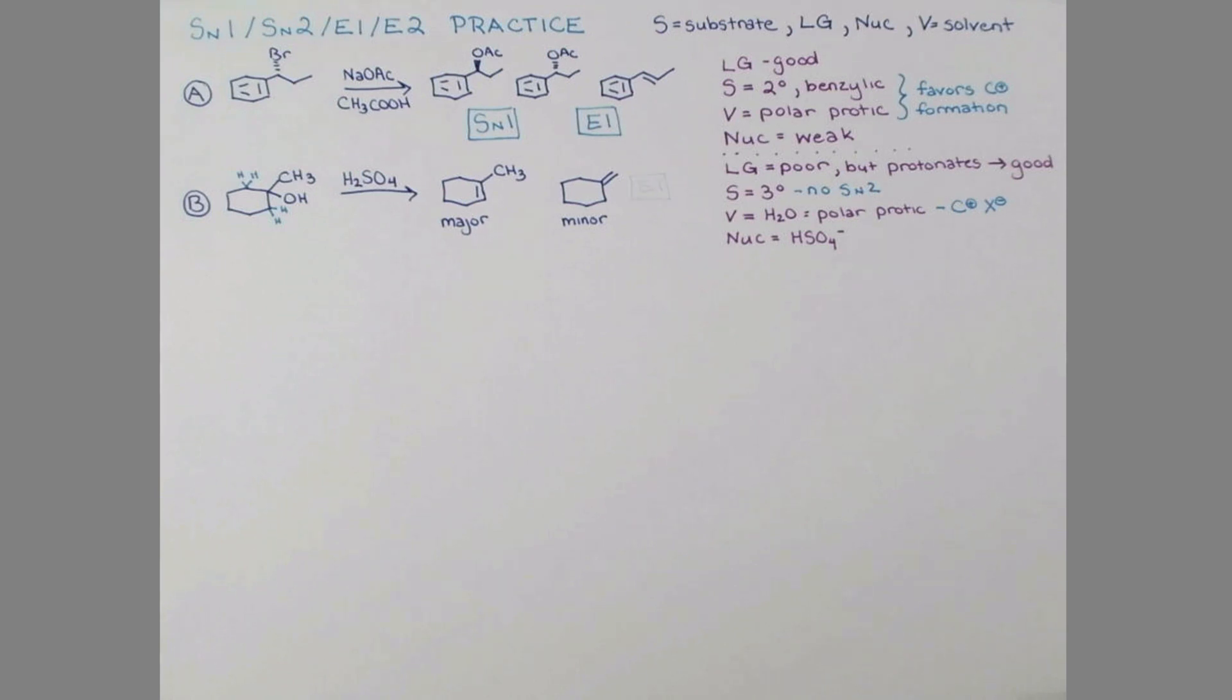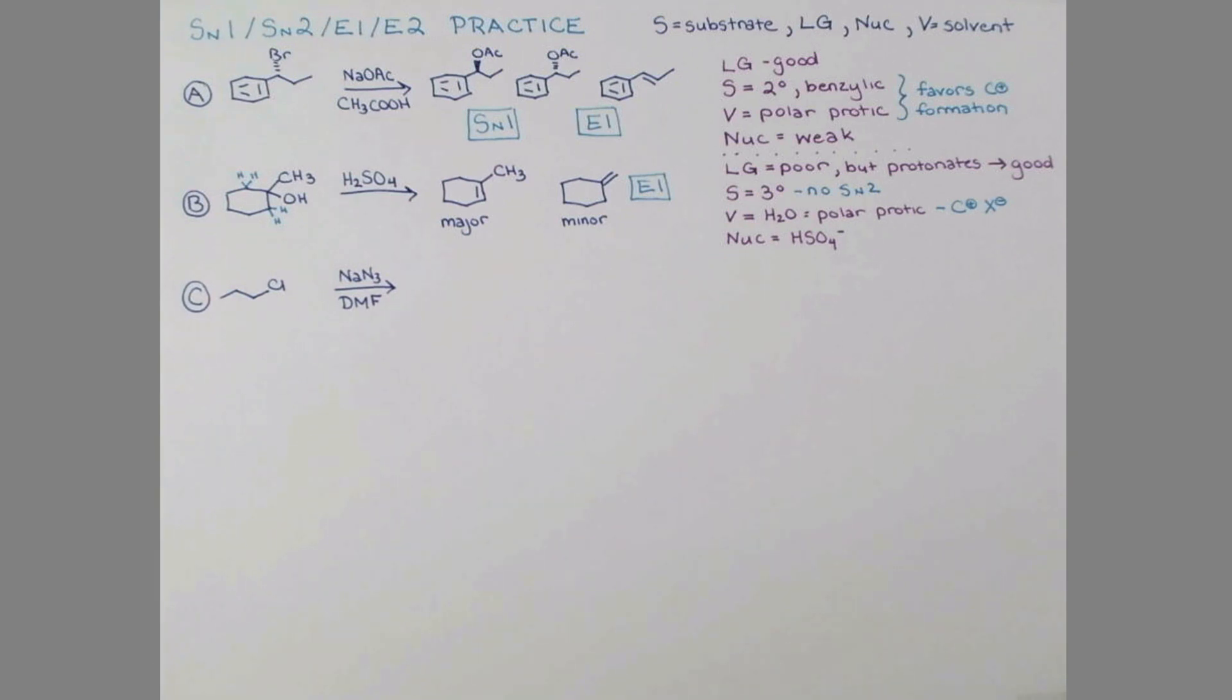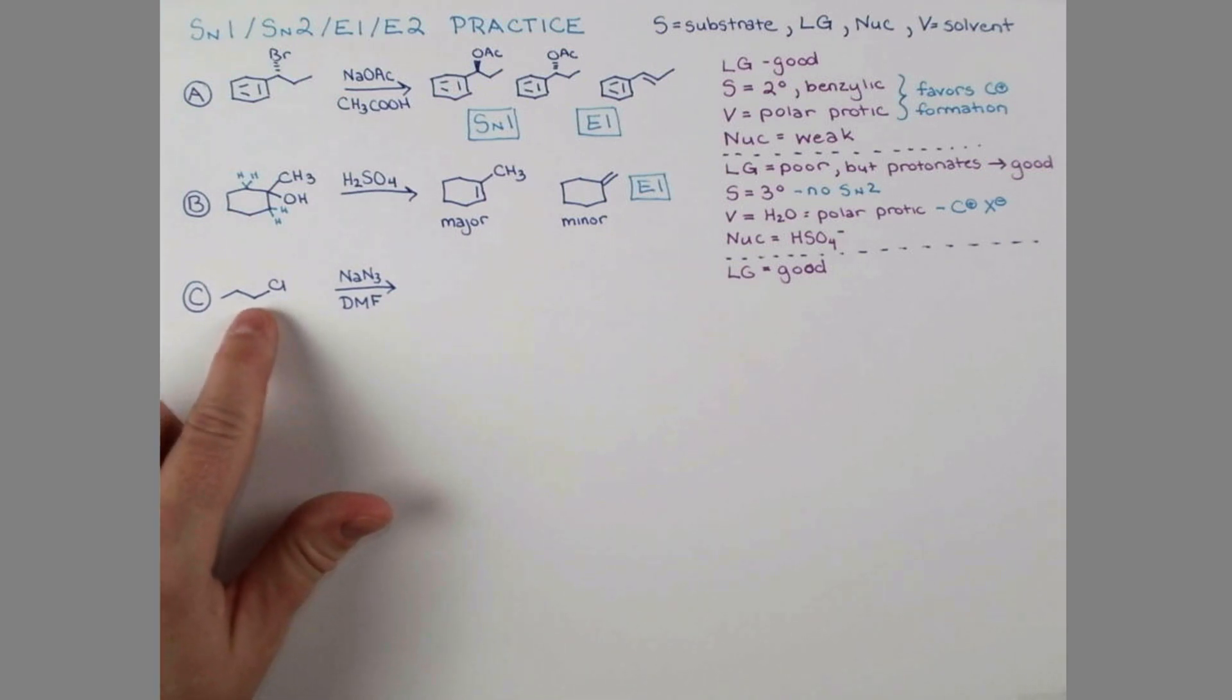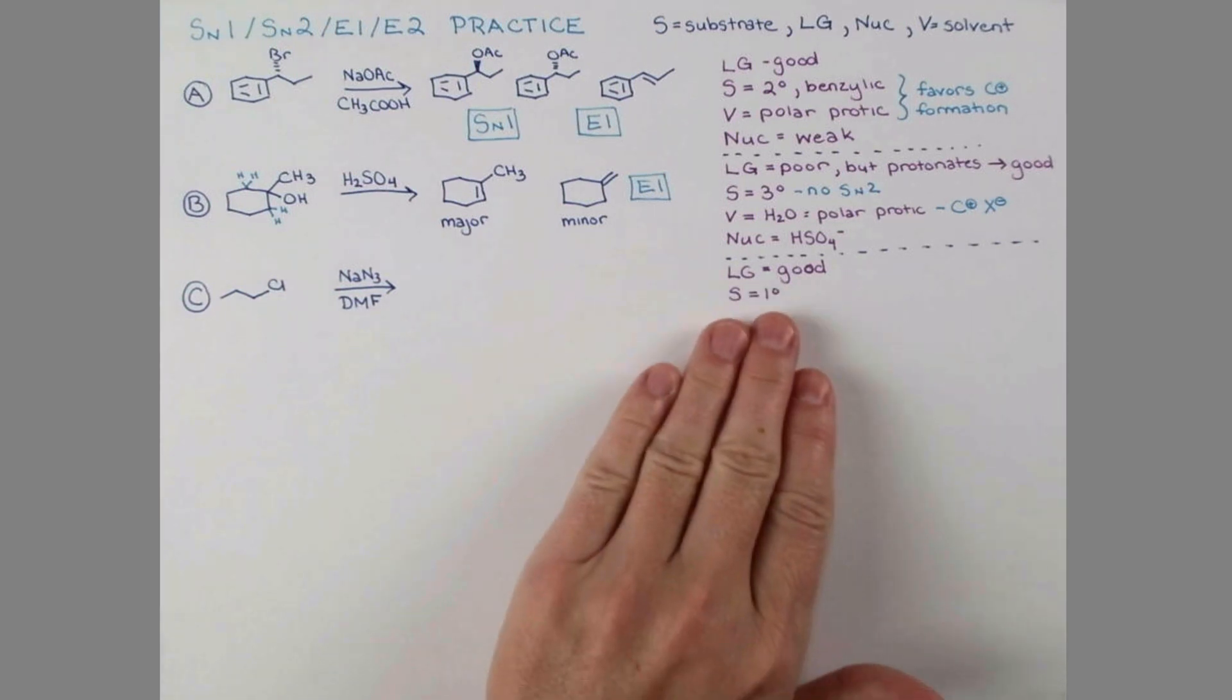In order to have E2, we need a strong nucleophile, which we don't have, so this reaction is going to proceed by E1 - forming a carbocation, eliminating water, and then the conjugate base of sulfuric acid or maybe some unprotonated water can come in and abstract the proton. The major product will be the more substituted alkene.